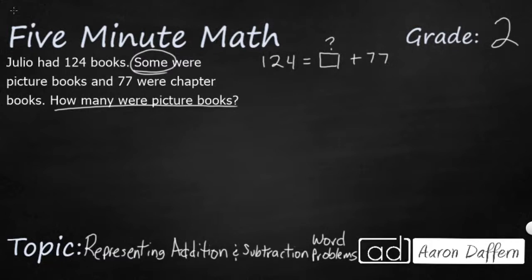One way I could represent this if I wanted to make a strip diagram. So I could use a part, part, whole, because I know that I have 124 books altogether. That's my total or my whole. And I know that I've got, I'll just put a question mark for my picture books and the rest are 77. So that's how I know that my question mark plus my 77 make 124.